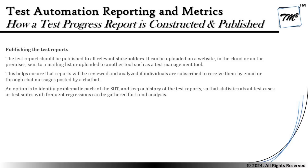You can put reports on chat or ask stakeholders to subscribe to a particular dashboard so they receive automated emails. An important option is to identify problematic parts of the SUT and keep a history of the test report so that statistics about test cases or test suites with frequent regression can be gathered for trend analysis. We must ensure the publishing method retains existing information alongside new reports. For example, if publishing weekly reports, you should be able to retain information about past weeks to quickly compare data and check trends in progress, coverage, or risk.